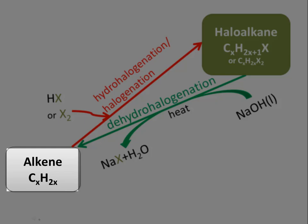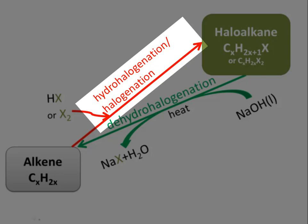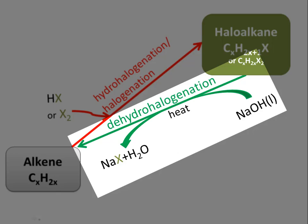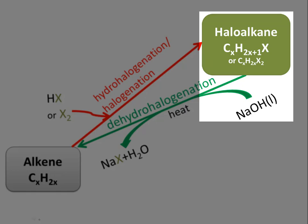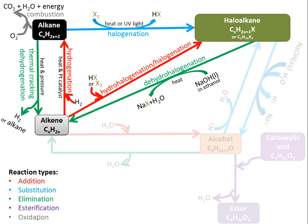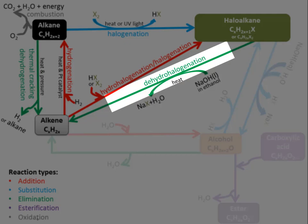In summary: an alkene reacts spontaneously with HX or X₂ to form a haloalkane — called hydrohalogenation or halogenation — as the double bond is replaced. The reverse, converting a haloalkane to an alkene, requires heating and concentrated sodium hydroxide, which pulls out the halogen (forming sodium halide) and the extra hydrogen (forming water). Hydrohalogenation and halogenation are addition reactions; dehydrohalogenation is an elimination reaction.